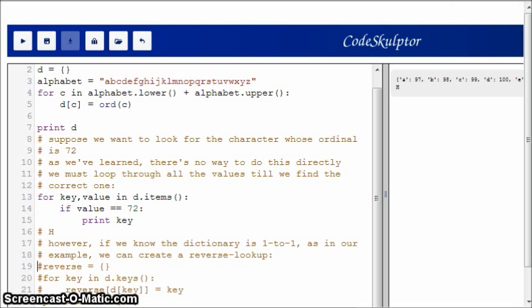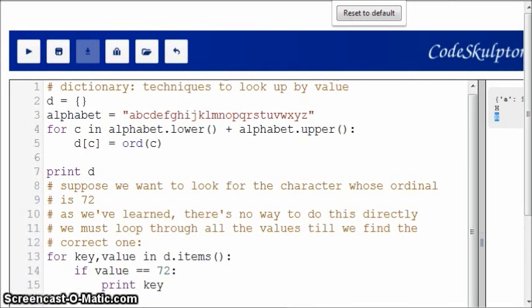Let me show you what I'm saying. We create a dictionary called reverse, and then we loop through the keys in the original dictionary. For each key, we're going to add the value in D as the key in reverse, and the value in reverse will be the key from D. Then we can just do a lookup on reverse. When we do that, you'll see that again we get H, which is what we expected from our previous search.